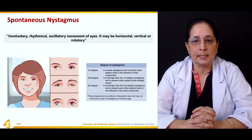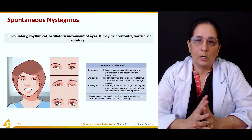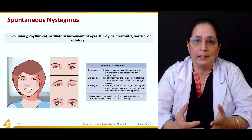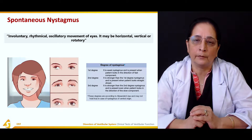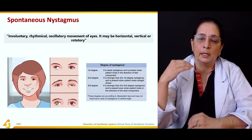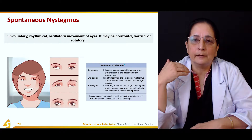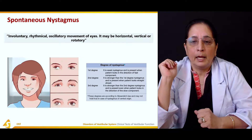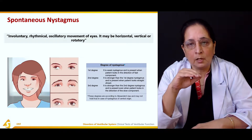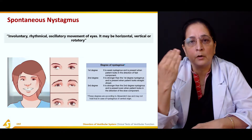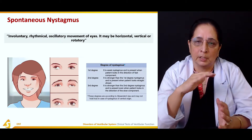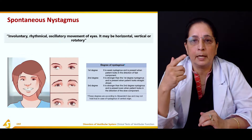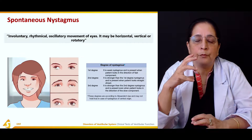First, the spontaneous nystagmus. What is nystagmus? Nystagmus is involuntary, rhythmical, oscillatory movement of the eye — involuntary rhythmical movement of the eyeball. It may be horizontal, vertical, or rotatory in three directions: horizontal nystagmus, vertical nystagmus, or rotatory form.